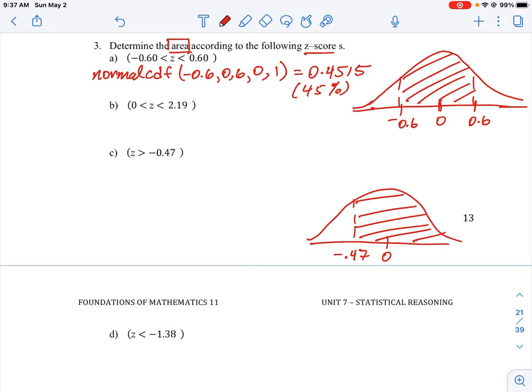Okay so to do this we have to supply our upper boundary value. So we can do normal CDF. Our lower boundary is negative 0.47. Make sure you have the negative sign in there. Now our upper boundary is not given but we have to put in an upper boundary value. So it's going to be 1 times 10 to the 99. Essentially we're representing infinity there.